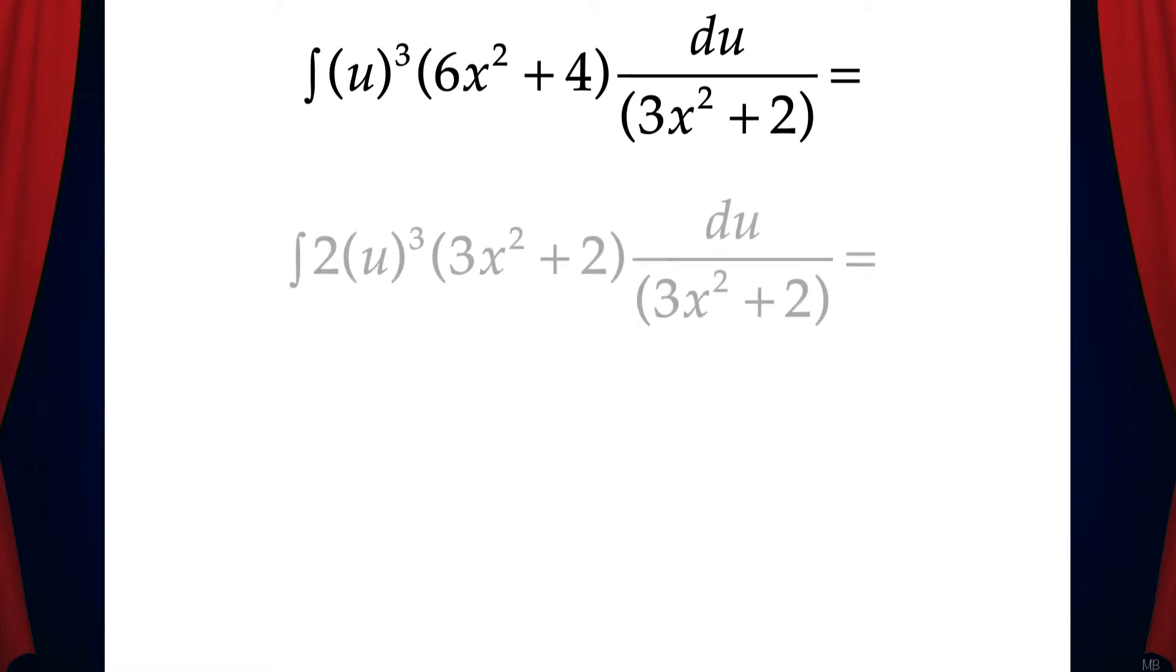Now our goal is to get this integral in terms of u only. So if we factor out a 2 from the 6x squared plus 4, that'll leave us with 3x squared plus 2 in the numerator. And this will cancel with the denominator. Then we're left with the integral of 2u cubed du, which is in terms of u only. Now we can solve, and we get 2u to the fourth over 4 plus c.